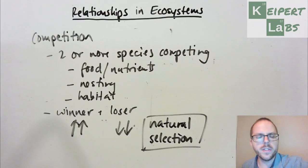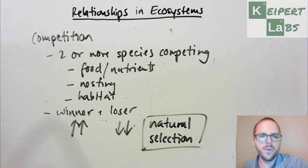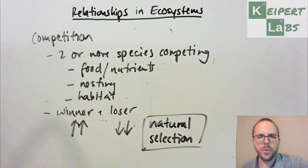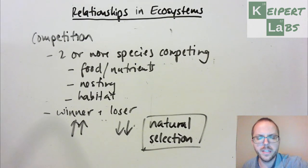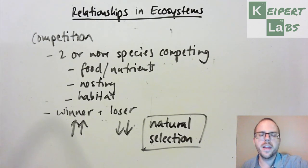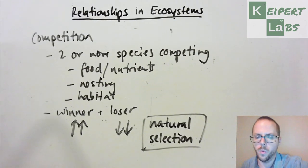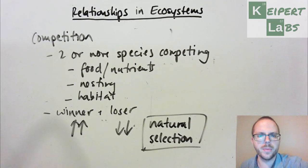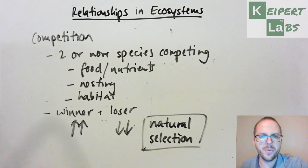So in this video we've looked at the four main types of relationships between living things in an ecosystem. We talked about mutualism where both organisms benefit; commensalism where one organism benefits and the other is unaffected; parasitism where one benefits at the expense of the other; and competition where two or more species compete for something — food, water, nesting areas, habitat. Those are all different ways that living things can interact with each other. Thanks very much for watching. Bye for now.